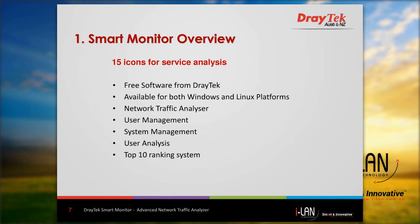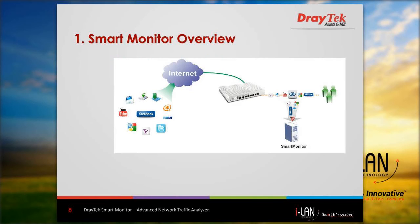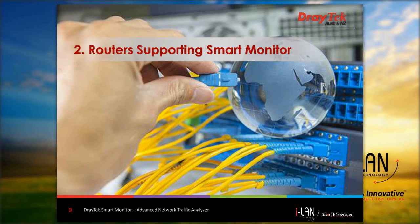There are 15 icons covering a range of analysis options, including traffic and user management systems. Here we have a typical network topology using a Vigor 2860 router. Smart Monitor will monitor user activities on the internet, and on the left-hand side you can see the types of applications that Smart Monitor is able to decode and place into categories for analysis.